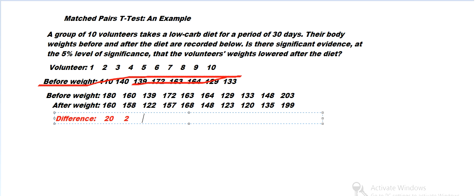163 minus 168 is minus 5, that's a negative difference, the after one is greater. And then 164 down to 148 is 16, down 6, down 13, down 13, down 4.